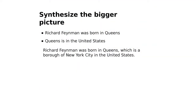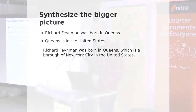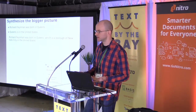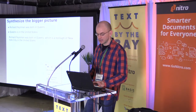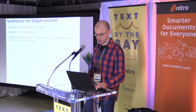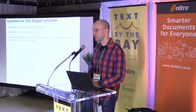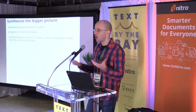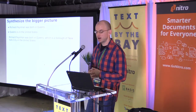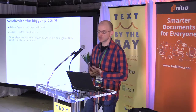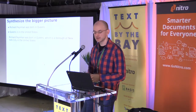From there, we can take the next step and synthesize an even bigger picture. We stated that Richard Feynman was born in Queens, and we inferred that Queens is in the United States. So we can make a connection and infer that Richard Feynman was born in the United States. Even more, we can connect all of this information and say more complexly that Richard Feynman was born in Queens, which is a borough of New York City, which is in the United States.